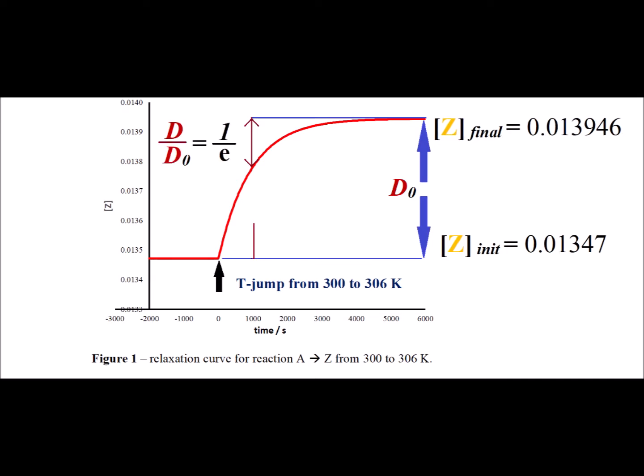The difference between the current value of Z and the equilibrium value at 306, that is our letter D. D sub 0 is the initial difference which we see by the blue arrows on the right hand side. So we are interested at the point when this ratio is equal to 1 over e.